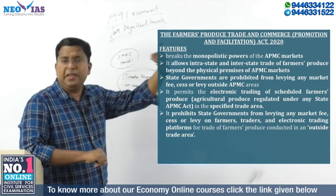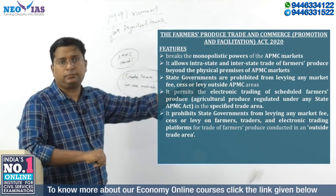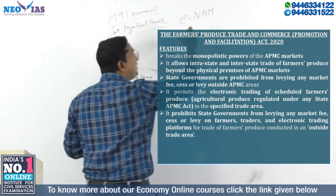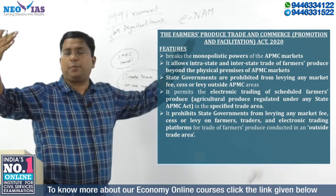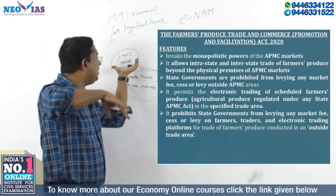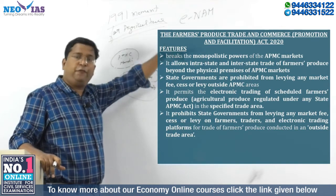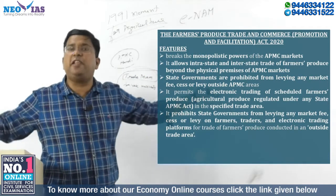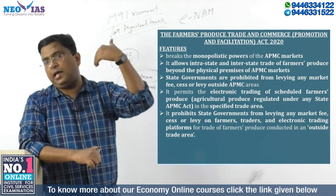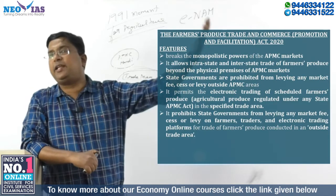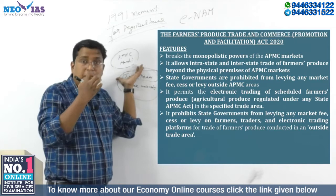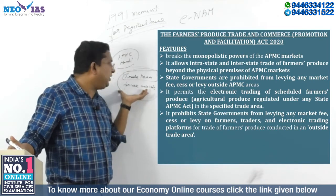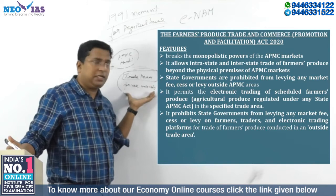A few years back, the central government introduced an electronic trading platform called eNAM (e-National Agriculture Market). eNAM tried to link all agricultural mandis, but even after three or four years, it could not connect almost all mandis in India — only around 500 APMC mandis have been connected, and not all products are traded on eNAM due to existing problems with state APMC laws. The electronic trading permitted here is in relation to this private market in the trade area.